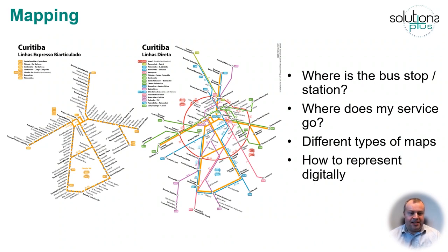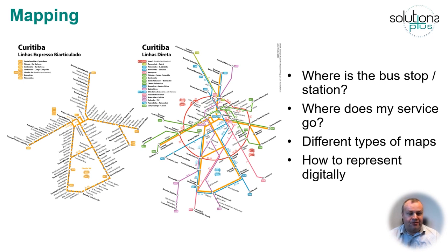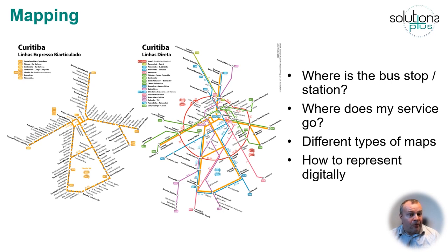Moving on to the types of data you can look to utilise, an important one is mapping. This is fundamental for customers to understand where routes are served and where the nearest bus stop is. There are different styles and different ways of presenting the same information. These two maps are both from the Kojiba bus rapid transit system — one is more of a line diagram which is simple to use, the other is a more geographical map which gives a feel for where the route actually goes. When you digitise a map, you need to think about how you present it. Things like latitude and longitude coordinates, street addresses, or postcodes can all be useful.